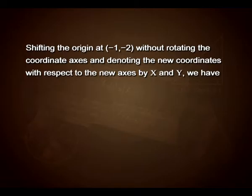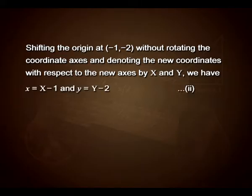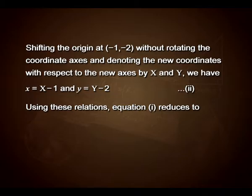Shifting the origin to (−1, −2) without rotating the coordinate axes, and denoting the new coordinates by X and Y, we have X = x − 1 and Y = y − 2, as equation (2). Using these relations, equation (1) reduces to X²/2² + Y²/1² = 1, equation (3). This is of the form x²/a² + y²/b² = 1 where a = 2 and b = 1. Thus the given equation represents an ellipse.